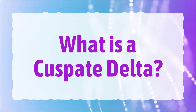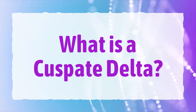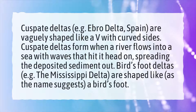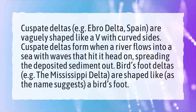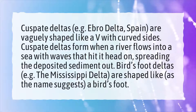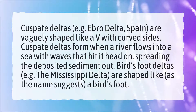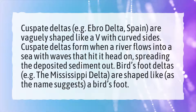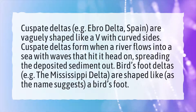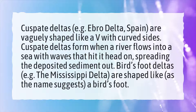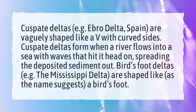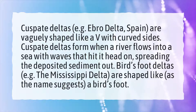What is a cuspate delta? Cuspate deltas, for example the Ebro delta in Spain, are vaguely shaped like a V with curved sides. Cuspate deltas form when a river flows into a sea with waves that hit it head-on, spreading the deposited sediment out. Bird's foot deltas, such as the Mississippi delta, are shaped like, as the name suggests, a bird's foot.